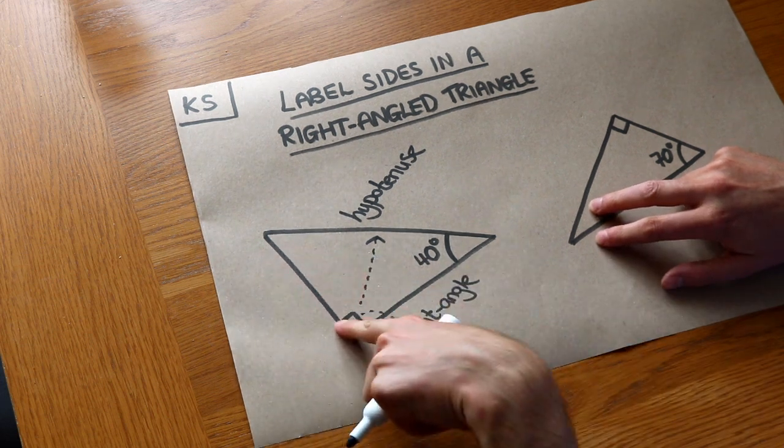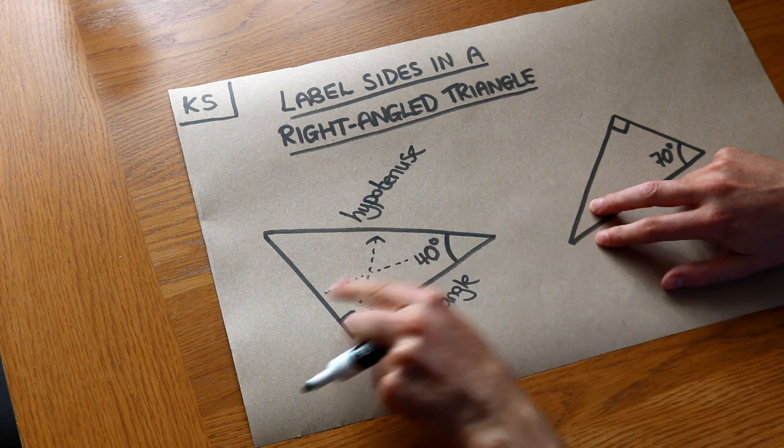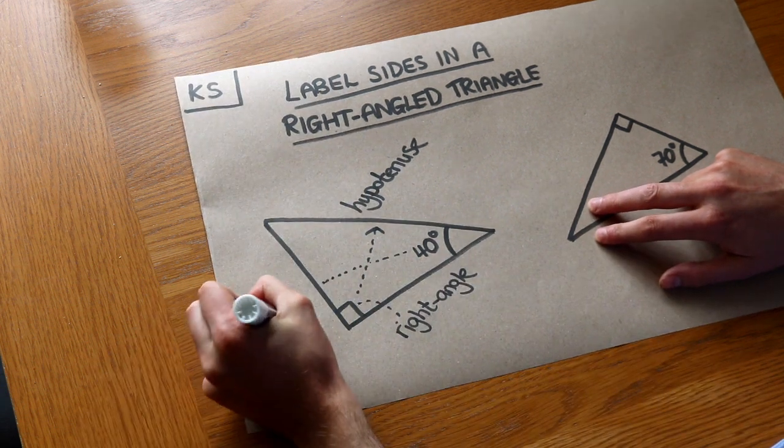Now this side here of the triangle, which seems to be opposite that angle of 40 degrees, that is known unsurprisingly as the opposite.